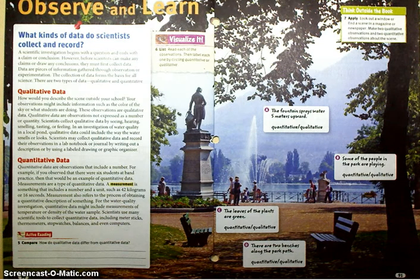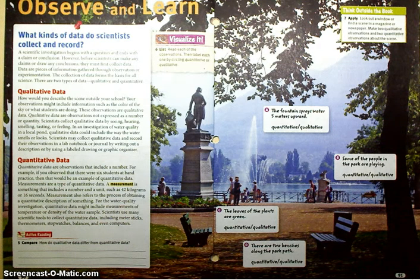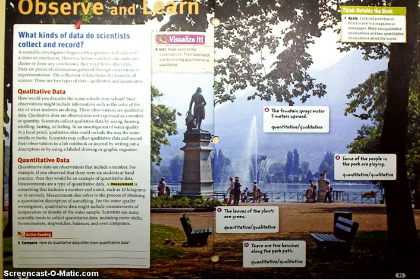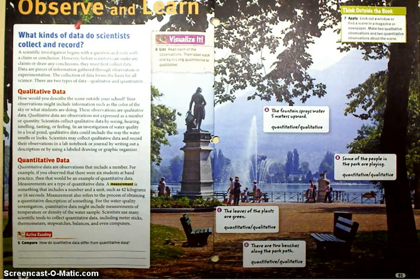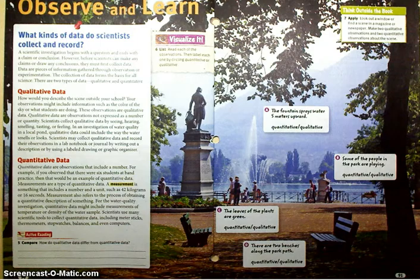Qualitative data are observations not expressed as a number or quantity. Scientists collect qualitative data by seeing, hearing, smelling, tasting, or feeling. In an investigation of water quality in a local pond, qualitative data might include the way the water smells or looks. Scientists may collect qualitative data and record their observations in a lab notebook or journal by writing out a description or by using a labeled drawing or graphic organizer.